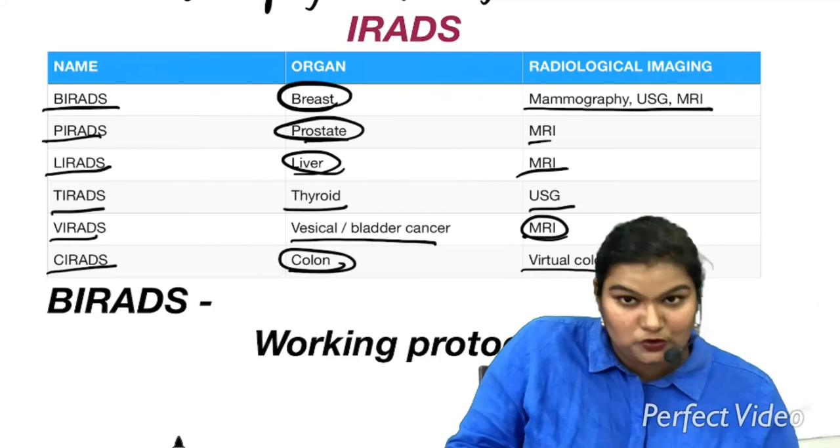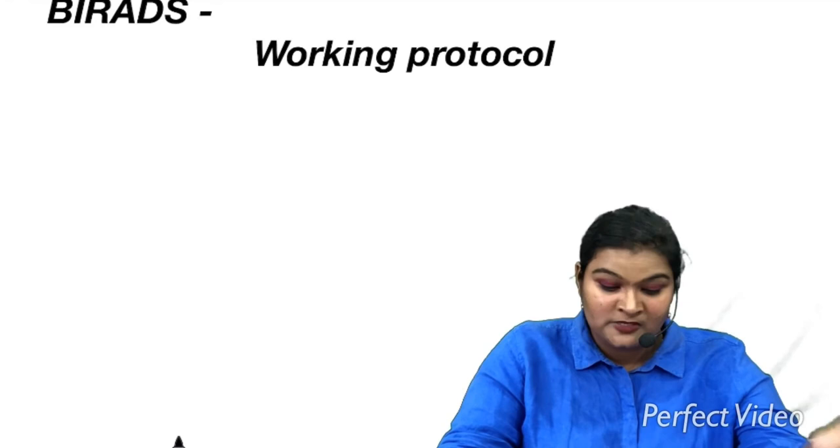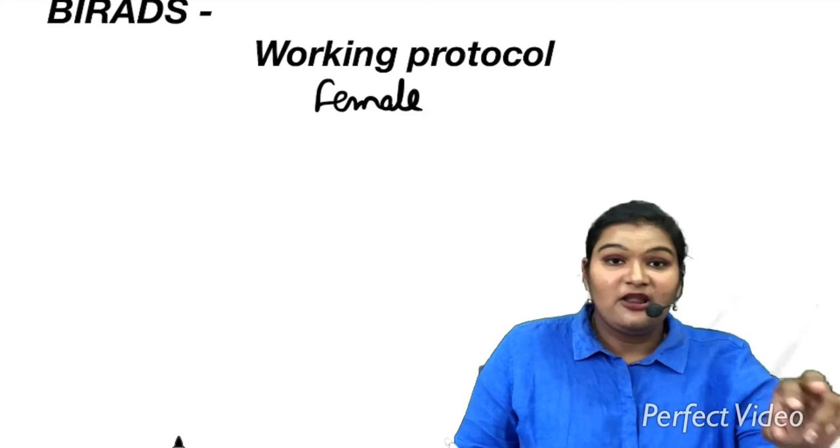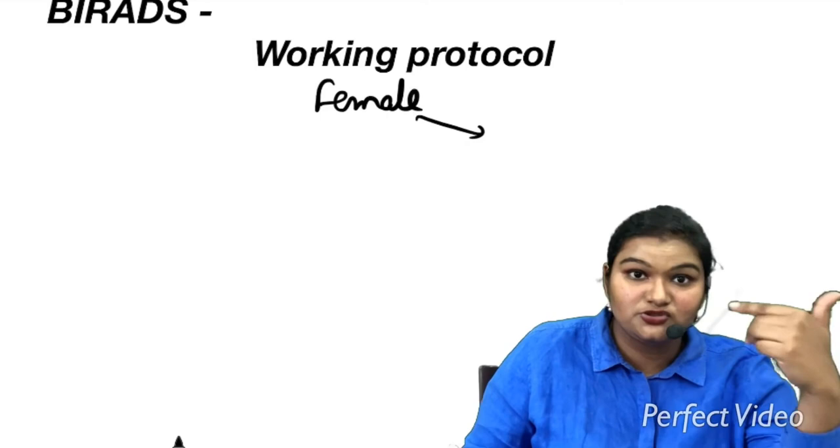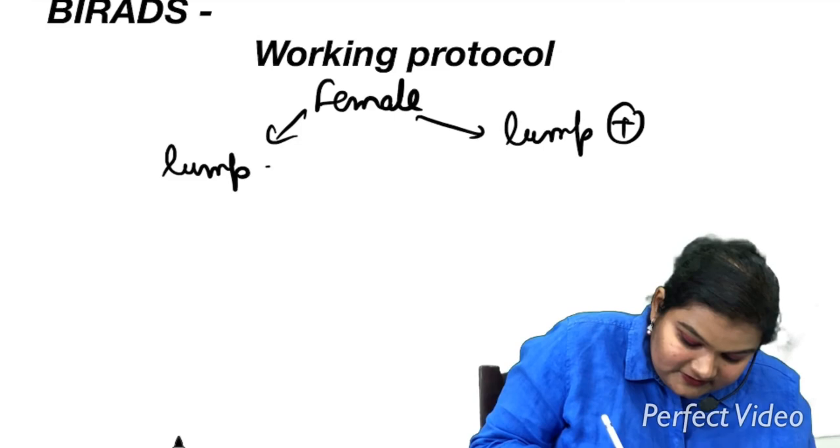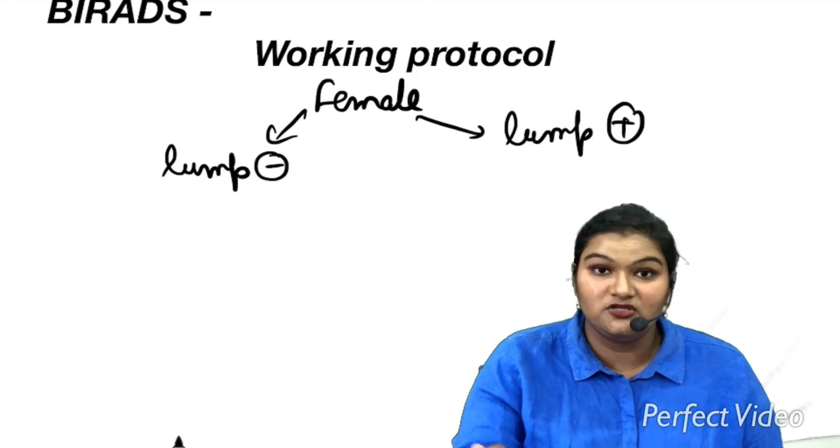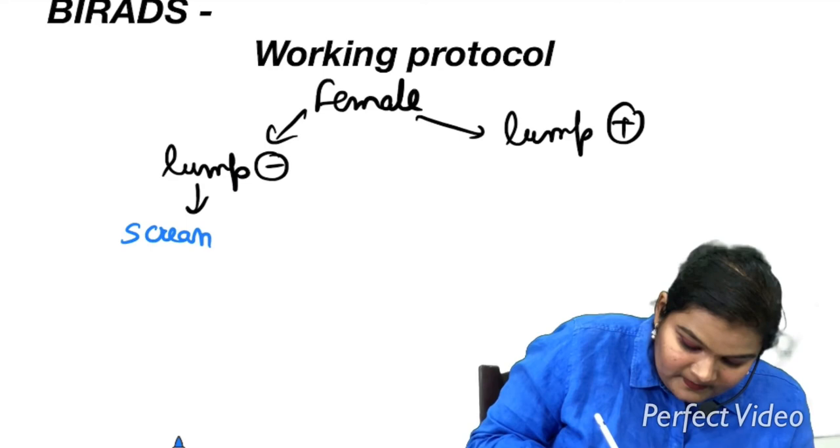Since we are dealing with breast imaging, we are going to deal with BIRADS. Let us first see the working protocol whenever a woman visits to you. If the female comes to you, you are left with two conditions. Either she comes to you with the complaint of lump in her breast, so it has a lump positive, or she comes to you for general examination. So the lump is absent. Since she is coming to you for general examination, you are going to take advantage of it and you are going to perform screening for breast cancer. So you are going to do the screening.